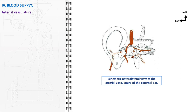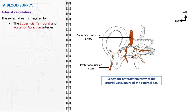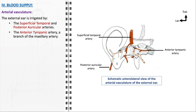The blood supply to the external ear is primarily facilitated by a network of arteries that ensure adequate irrigation and nourishment of the ear's structures. The superficial temporal artery, a significant branch of the external carotid artery, ascends over the temporal region of the skull, providing blood to the upper and anterior parts of the auricle. Complementing it is the posterior auricular artery, which also branches from the external carotid artery and supplies blood to the posterior part of the auricle and adjacent areas of the scalp. Additionally, the anterior tympanic artery, a branch of the maxillary artery, provides essential blood supply to the area around the tympanic membrane.